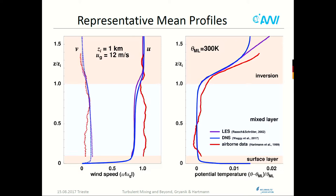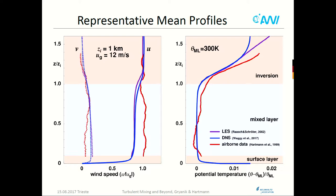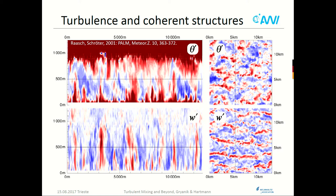You must keep in mind that measurements show instantaneous fields, while the DNS (blue) and LES are here nearly coincident — they are horizontally averaged over the domain of simulations.